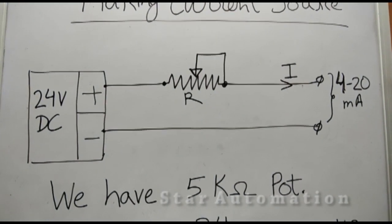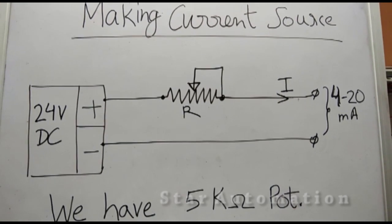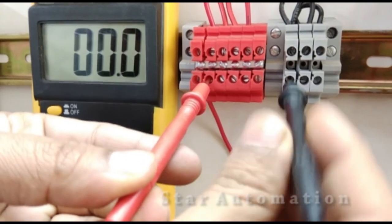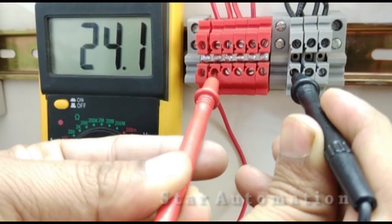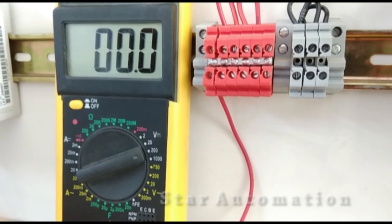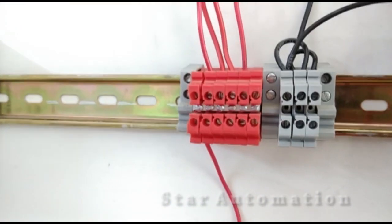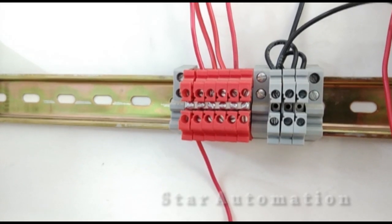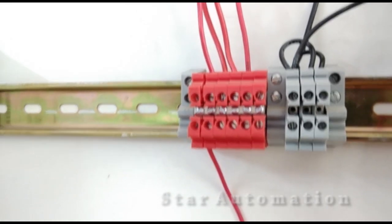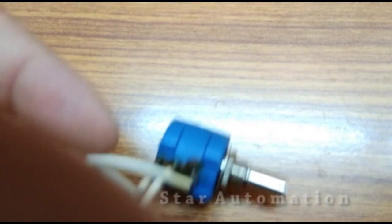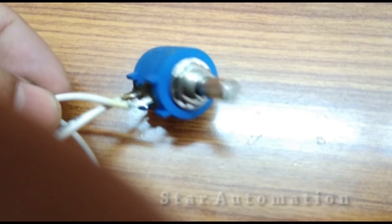By varying resistance we can regulate the mA current. Now let us implement it. These are the DC positive and common terminals, and you can see we have 24 volt DC available at these terminals. We have one 5 kilo ohm potentiometer and we will connect it at these terminals. It has 3 terminals but we will use 2 terminals only, which gives varying resistance when we vary the knob.